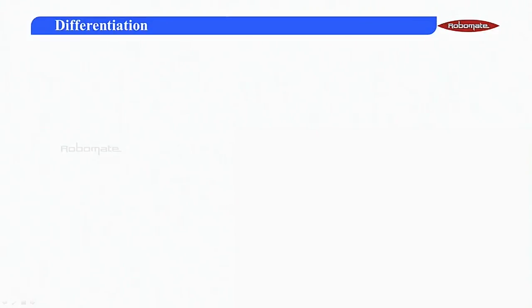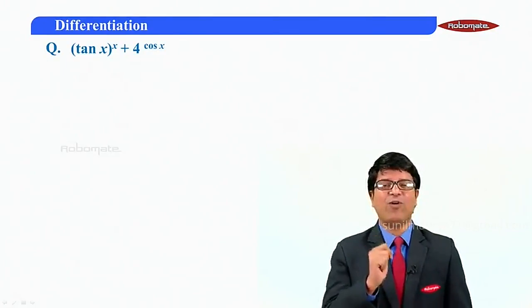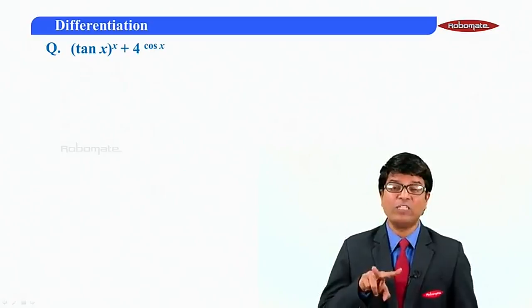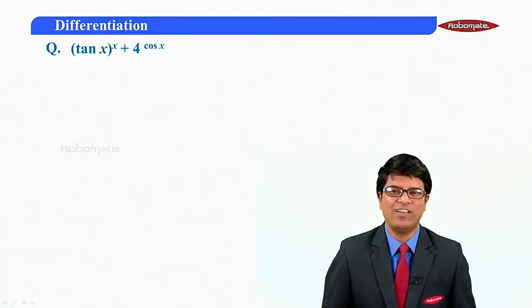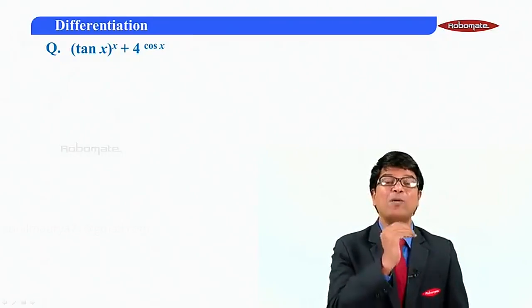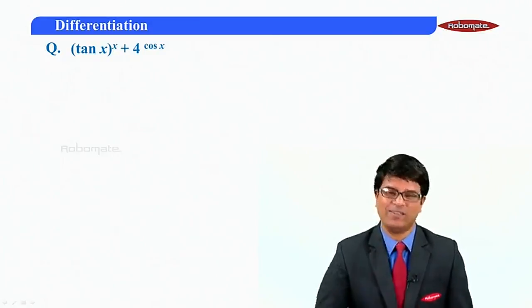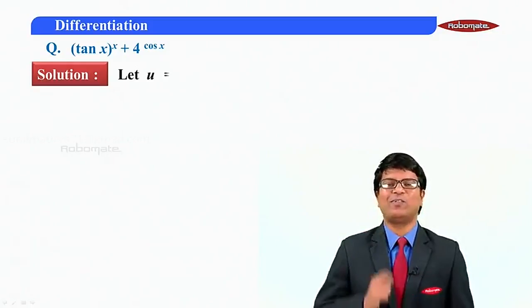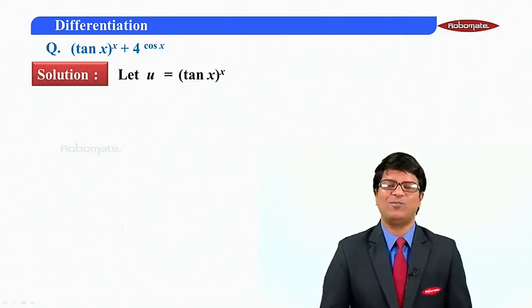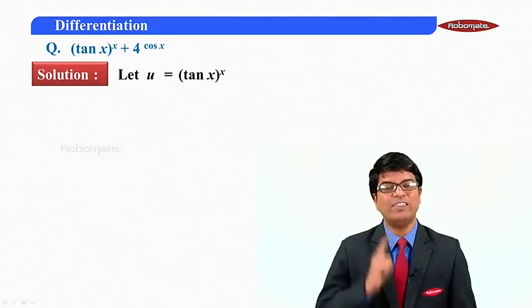Let us start a problem related to logarithmic differentiation. The problem says tan x raised to x plus 4 raised to cos x. One function is of the form variable raised to variable, and the other is a composite function of the form a raised to x, separated by plus. Let us name the first function as u, where u is equal to tan x raised to x. The base is a variable and the power is a variable.